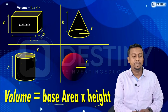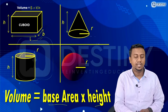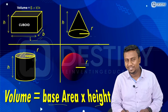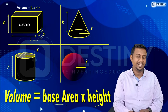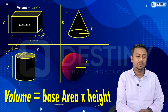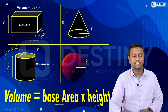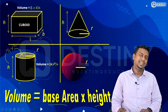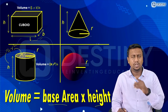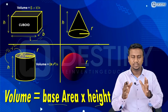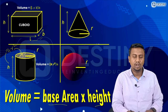For a cylinder, the base area is in a circular shape. The area of a circle is π r squared, so multiplying by height h gives the volume of a cylinder as π r squared h.